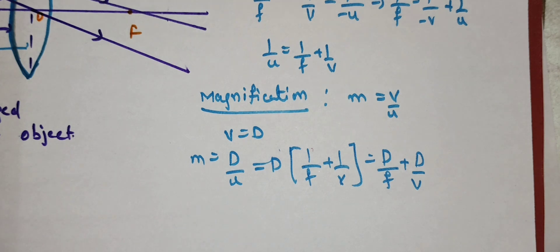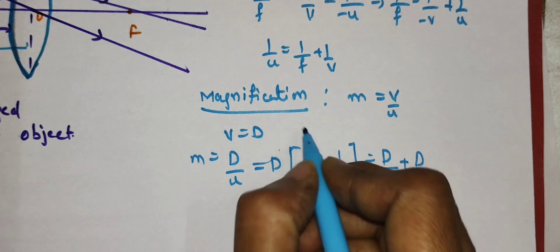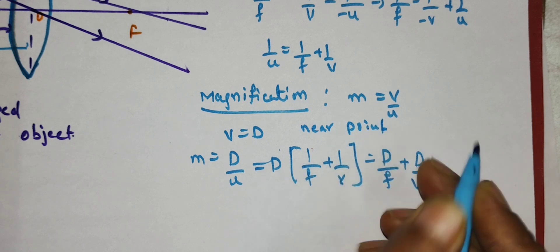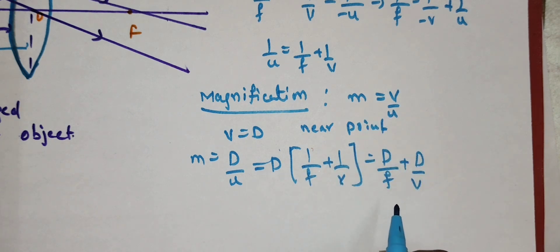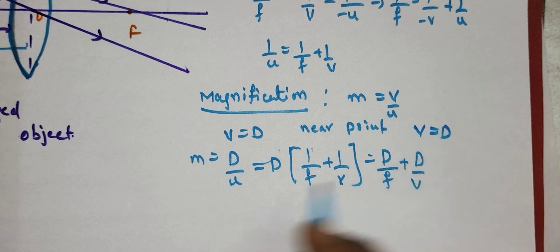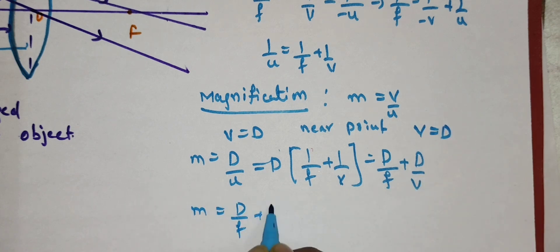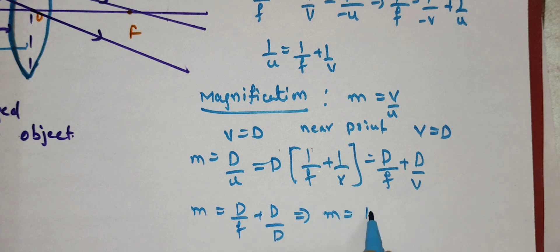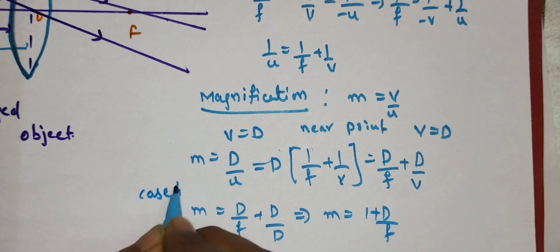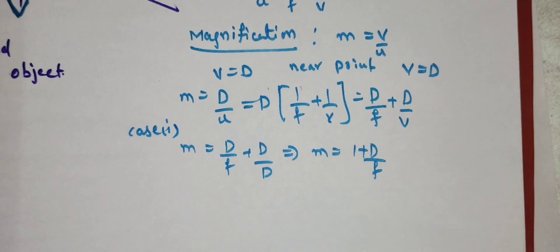For maximum magnification, V = D, which corresponds to the near point. Then the equation becomes M = D/F + D/D, which simplifies to M = 1 + D/F. This is Case 1: maximum magnification formula for a simple microscope.